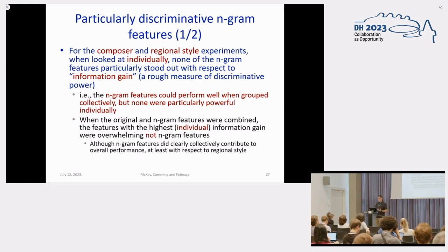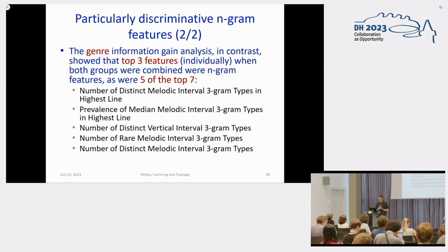In addition to looking at just the classification accuracy, we also looked at which individual features seemed to reveal the most information, which seemed to be most discriminative in the different classes we were looking at. To do this, we used a simple metric called information gain that looked only at the individual features. It turned out that in the composer and regional style experiments, the n-gram features did not have particularly high information gain. Collectively, they seem to do useful things, but looking at them individually, they did not have a high discriminative power. However, in the genre experiment, the top three features were all n-gram features, and five of the top seven features were n-gram features. Looking at the particular features, the general pattern emerged: the melodic n-gram features seem to be especially important. And also features that emphasize diversity, rather than looking at specific n-grams or how often specific n-grams occurred, seemed to be the most successful. In fact, all of these five features that were the highest in information gain were diversity-oriented features.